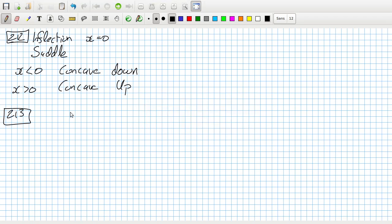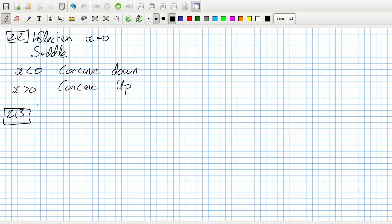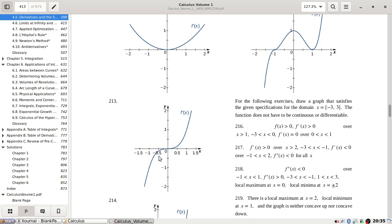213, inflection at x equals zero. Positive, min, convex, concave up.